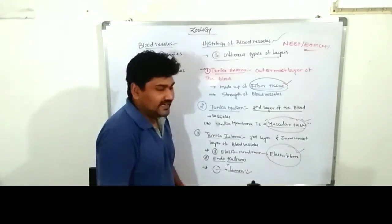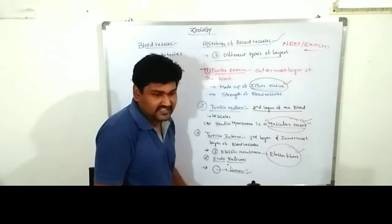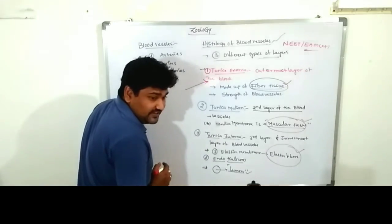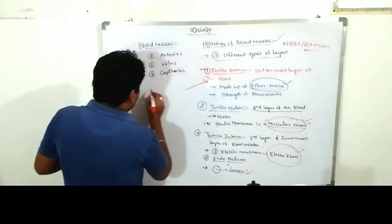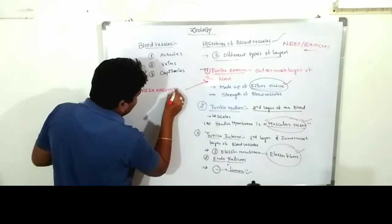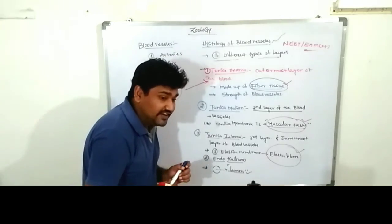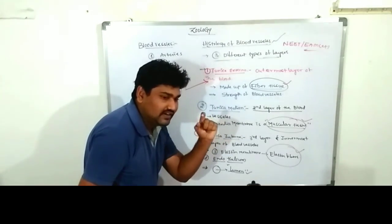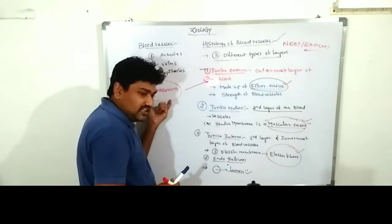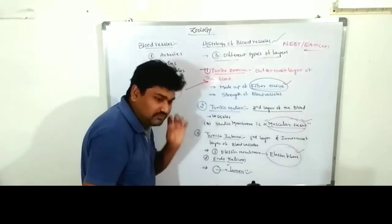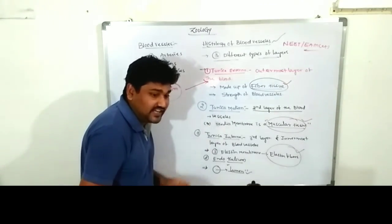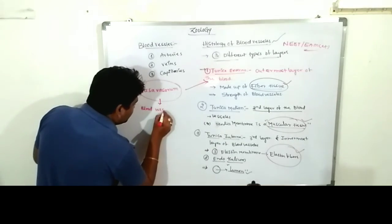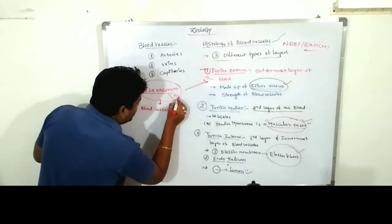In the tunica interna, there is a special blood vessel present known as the vasa vasorum. The vasa vasorum is a special blood vessel that carries oxygenated blood from the heart to the blood vessel walls. It is therefore called the 'vessels of the vessel' or 'blood vessels of the vessel.'